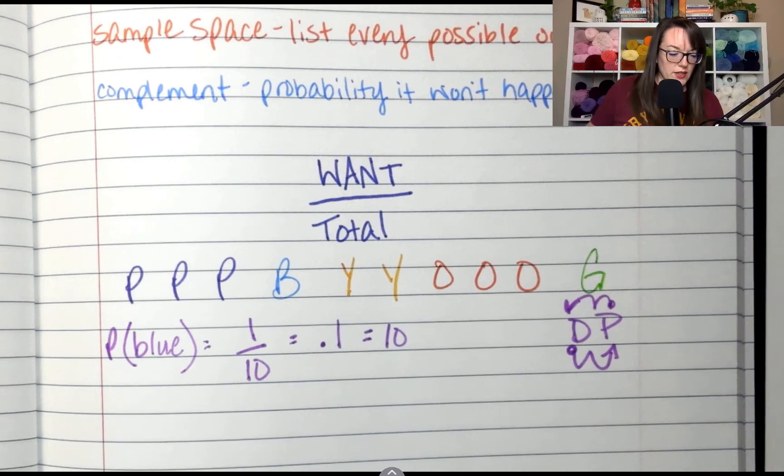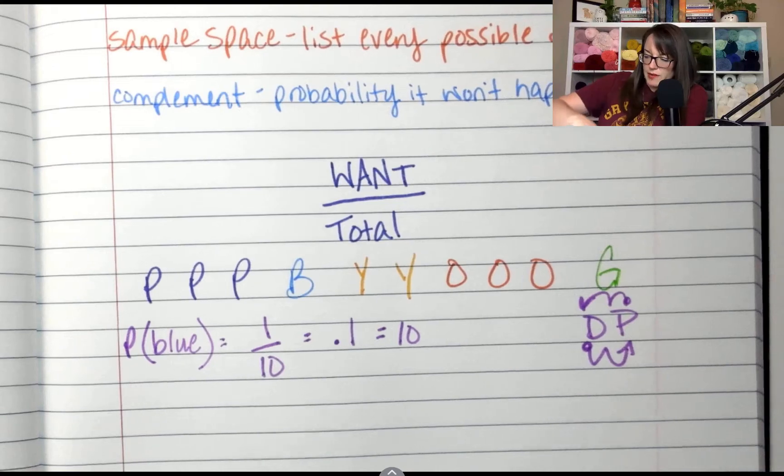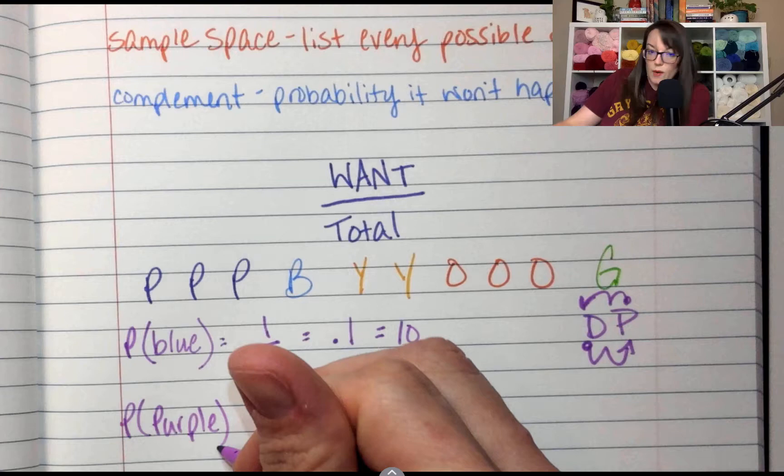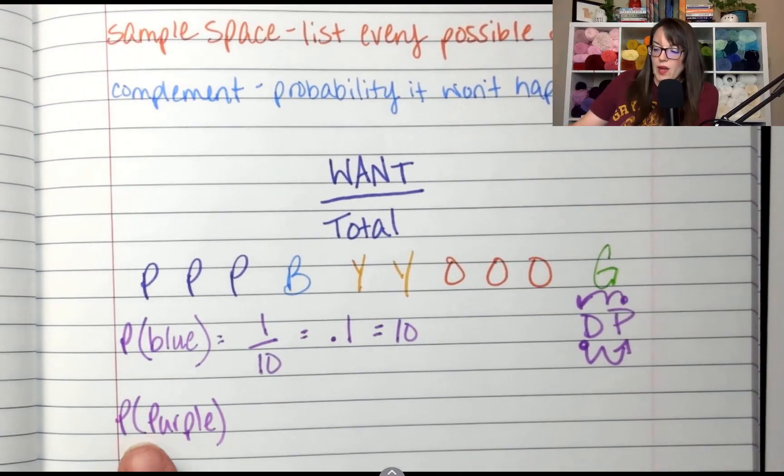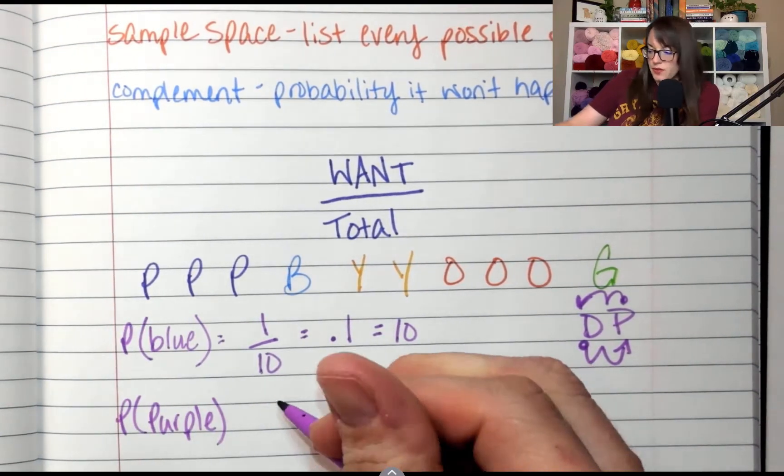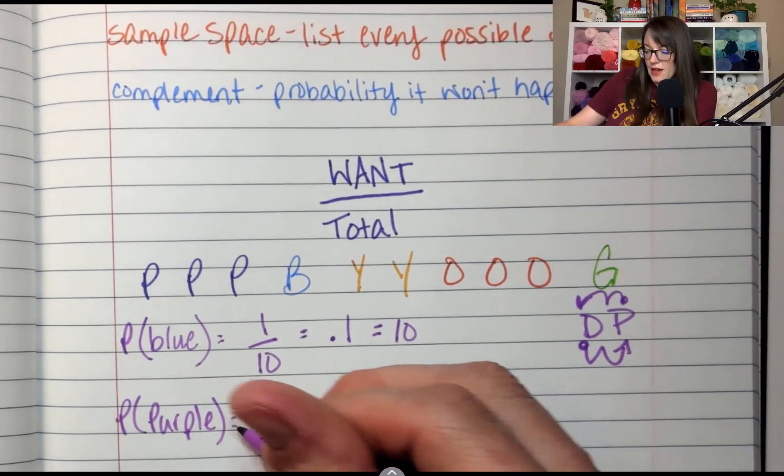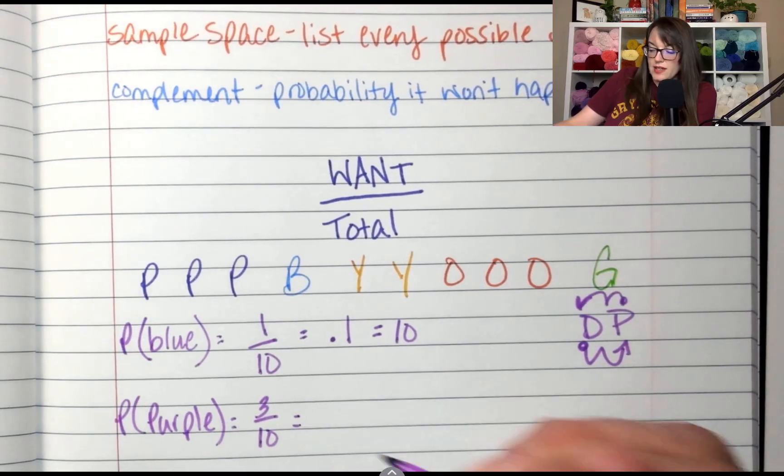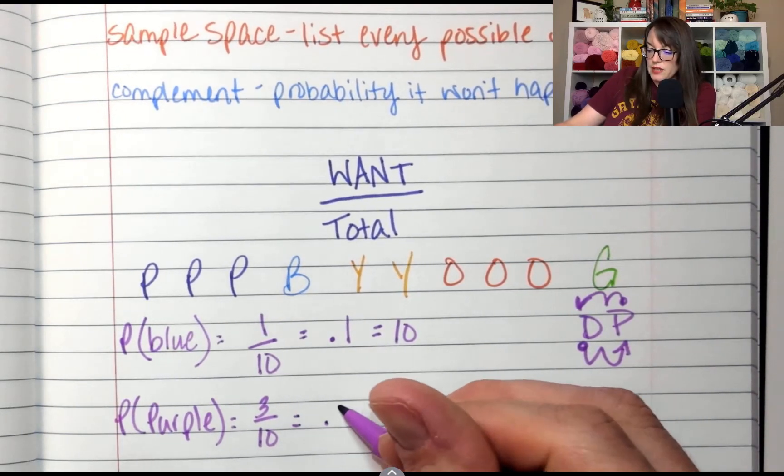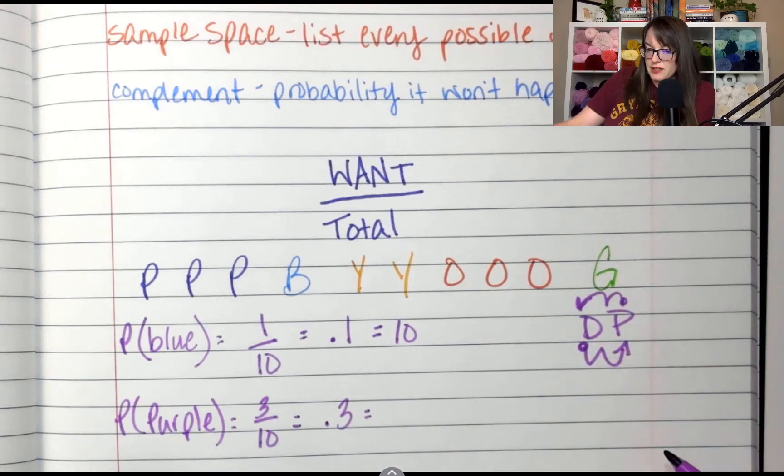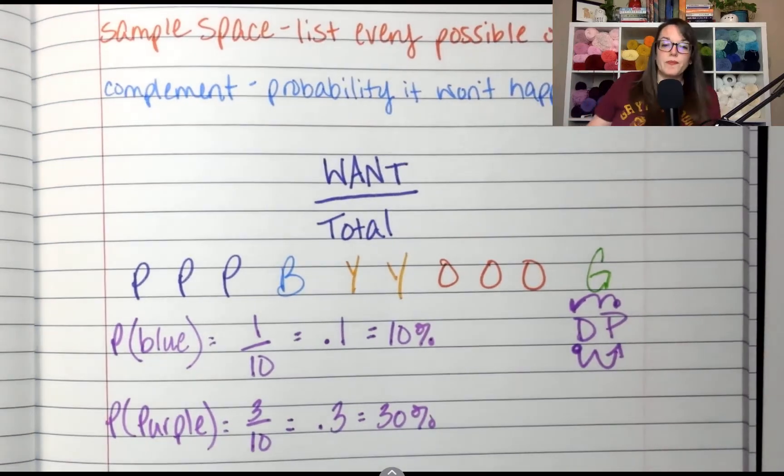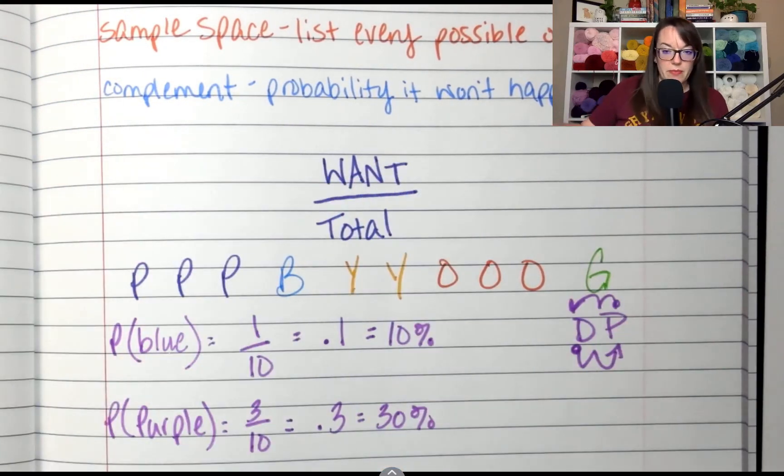All right. Now let's do a different one. Let's do purple. The probability of getting a purple. So how many purples? Three. Out of how many total? Ten. Now let's write that as a decimal. Point three. And then as a percent. Thirty percent. Forgot to put my percent sign. So there's a 30% chance I would randomly pick a purple.